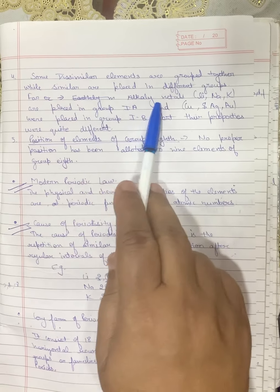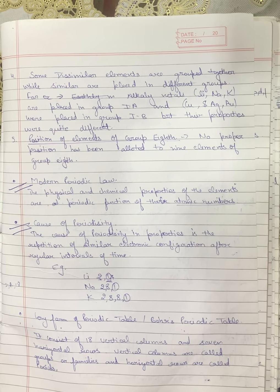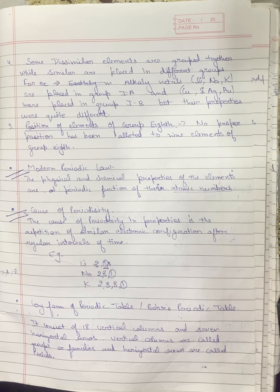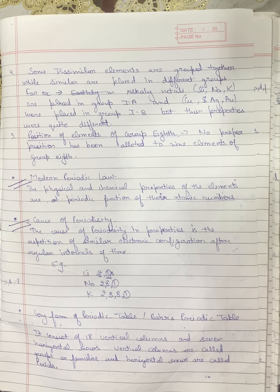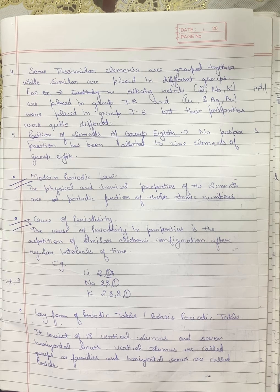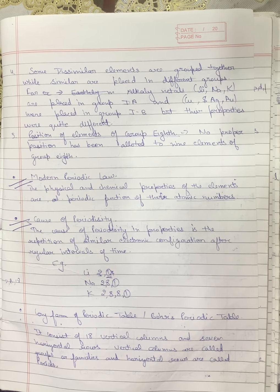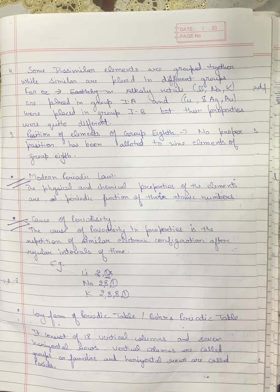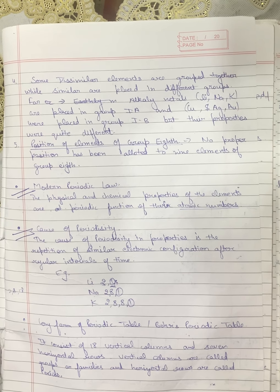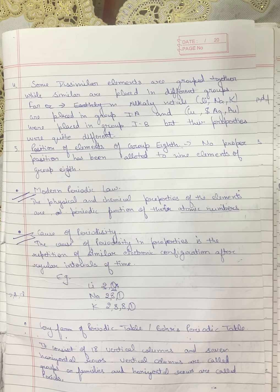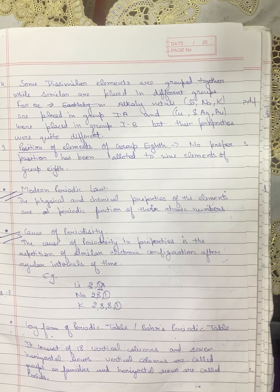Another defect was that dissimilar elements were placed in the same group, while similar elements were sometimes placed in different groups. Then there was the position of Group 8 — why was it not divided into A and B subgroups like the others? These were the drawbacks of Mendeleev's periodic table. The rest we will study in the next lecture. Thank you.